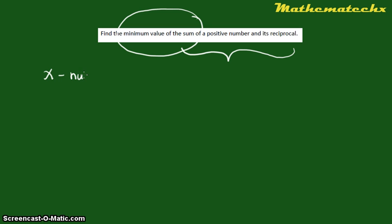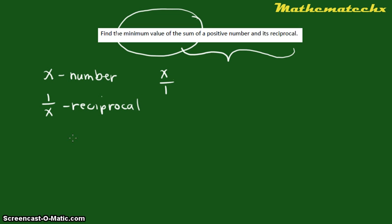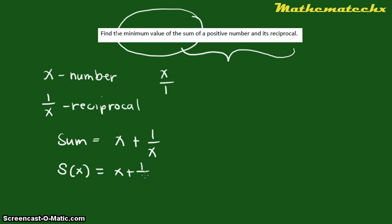We can let x be that number since we don't know it yet. Reciprocal means it's the fractional reverse of the number — note x is the same as x over 1, so the reciprocal of x is 1 over x. What we want is the sum of the positive number and its reciprocal, which is x plus 1 over x. We can denote the sum as S(x) = x + 1/x.